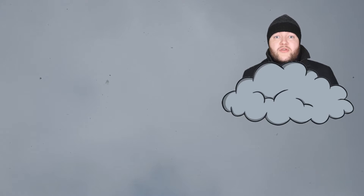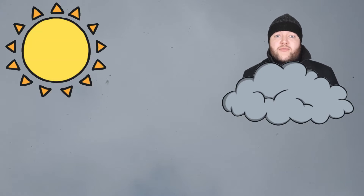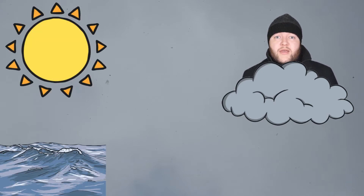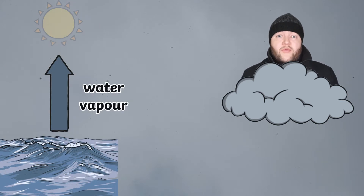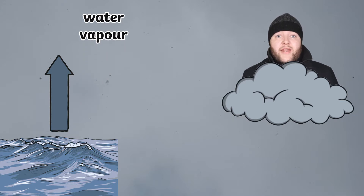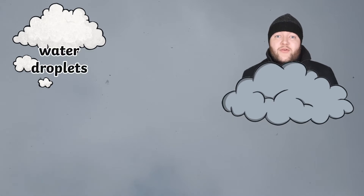So you might already know how rain forms from doing the water cycle. Heat from the sun turns moisture from oceans, lakes, and rivers into something called water vapour. Water vapour is a gas that rises, then cools, and then finally turns into clouds. When the build-up of water droplets in the clouds gets too heavy, they eventually fall as rain.